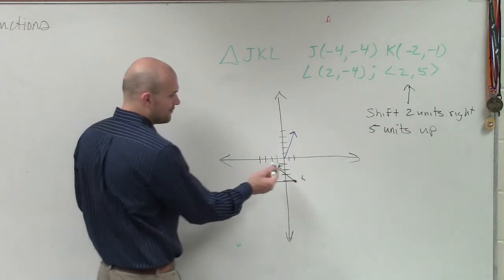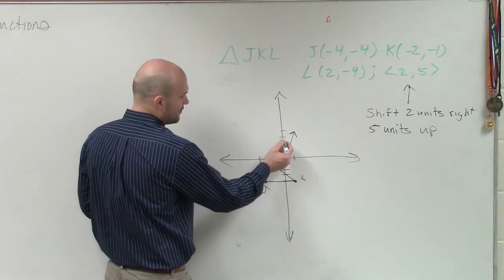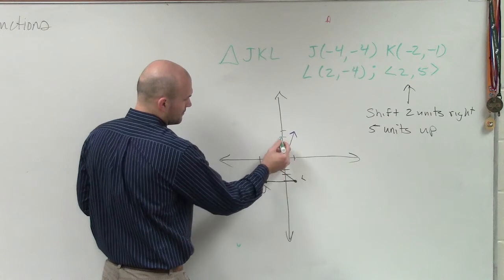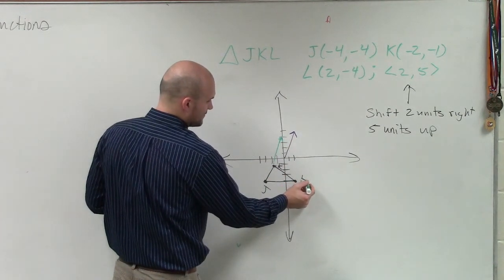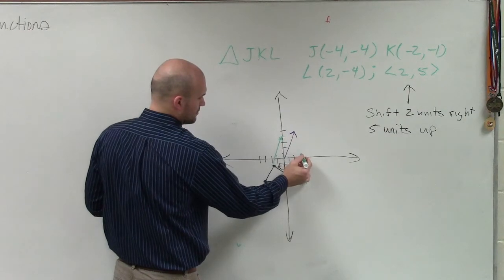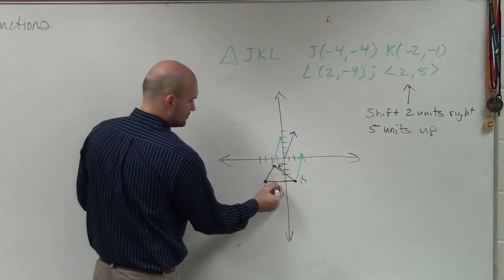So I can go from each point, I can go over 2, up 5. 1, 2, 3, 4, 5. Over 2, up 5. Over 2, up 5.